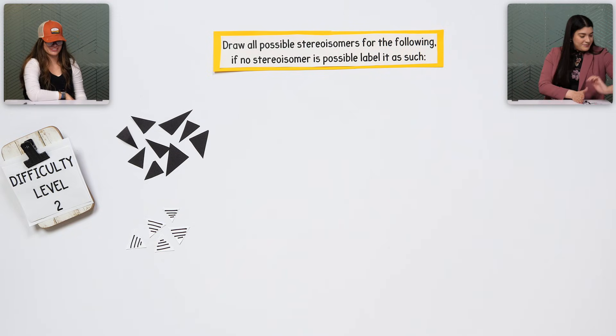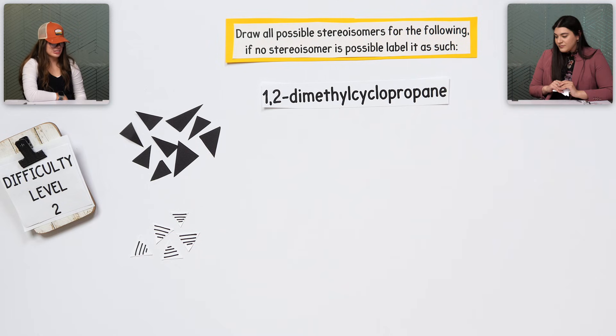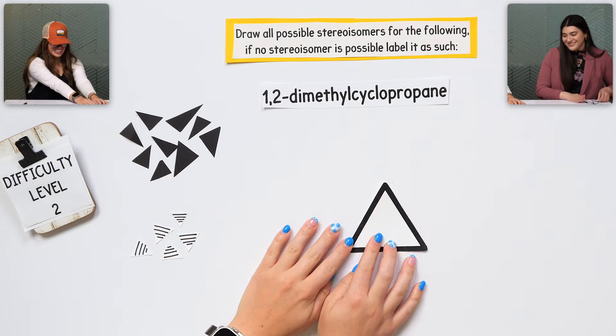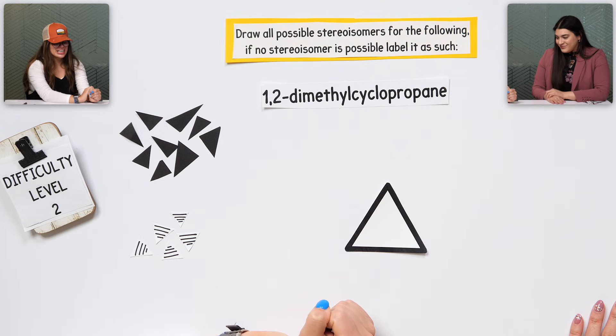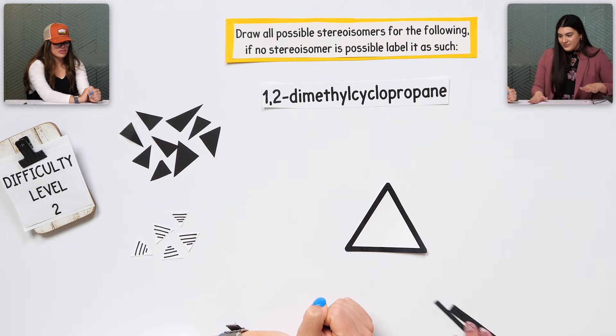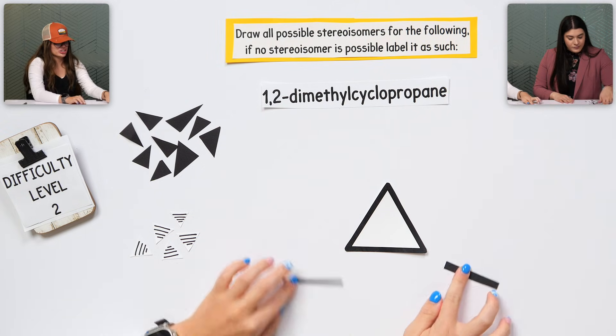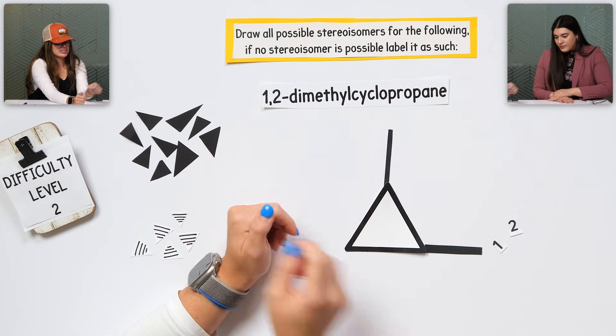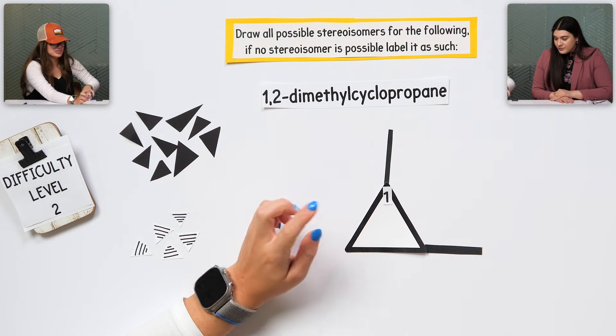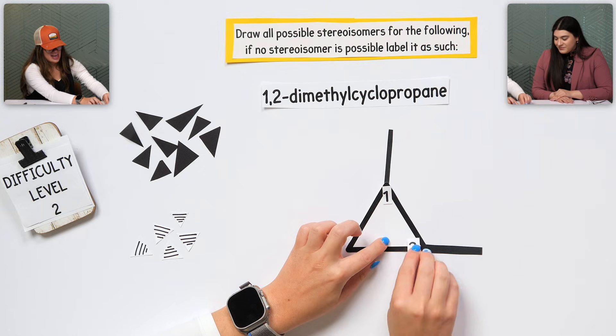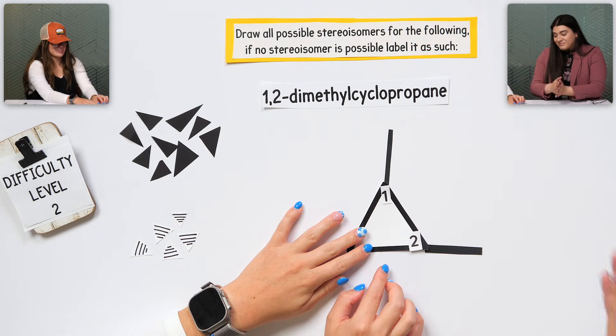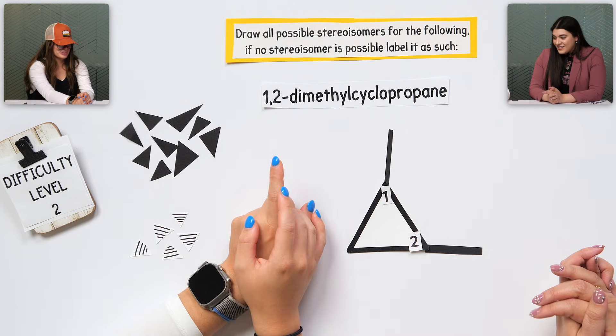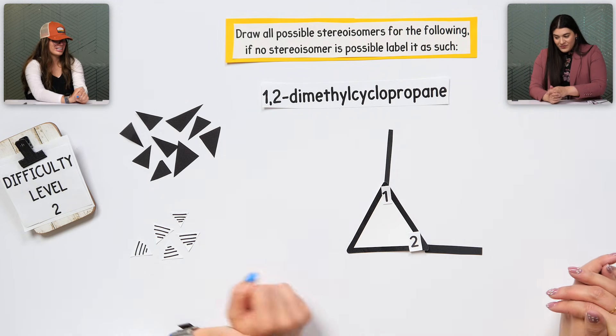Let's do another one. What does that look like? Oh, cyclopropane, a triangle. Beautiful. And then, I have dimethyl. So, I have two methyl groups coming from the one and the two. Where's the one and the two? And I'm going to label it one, two. So, my substituents are at the lowest. That's everything.